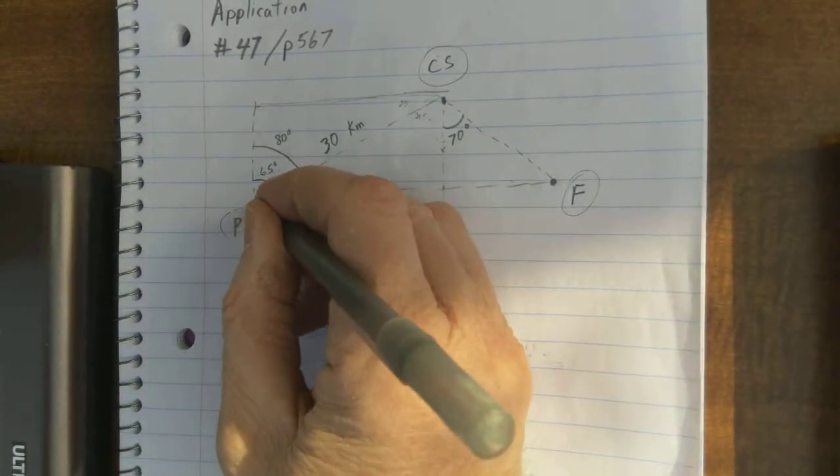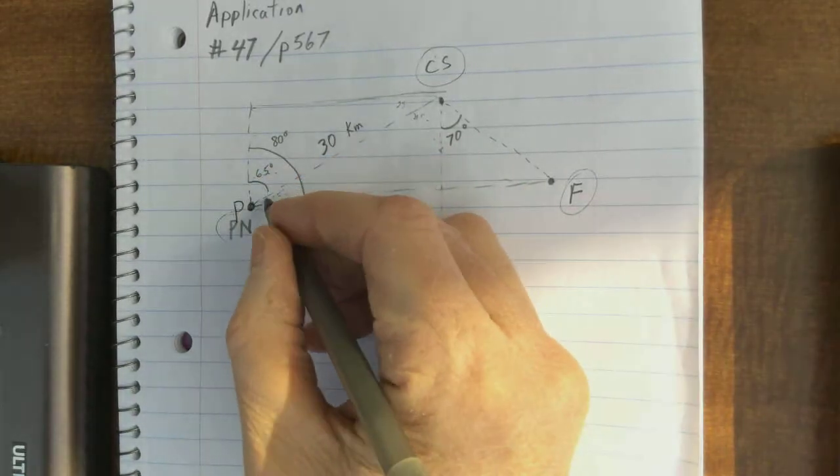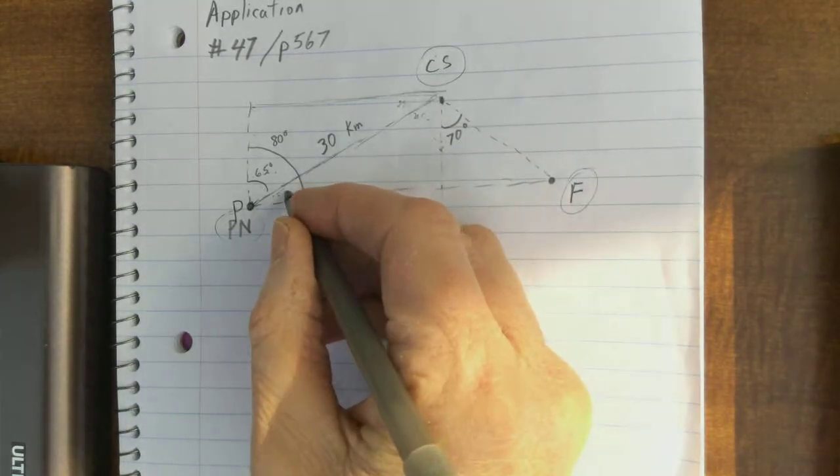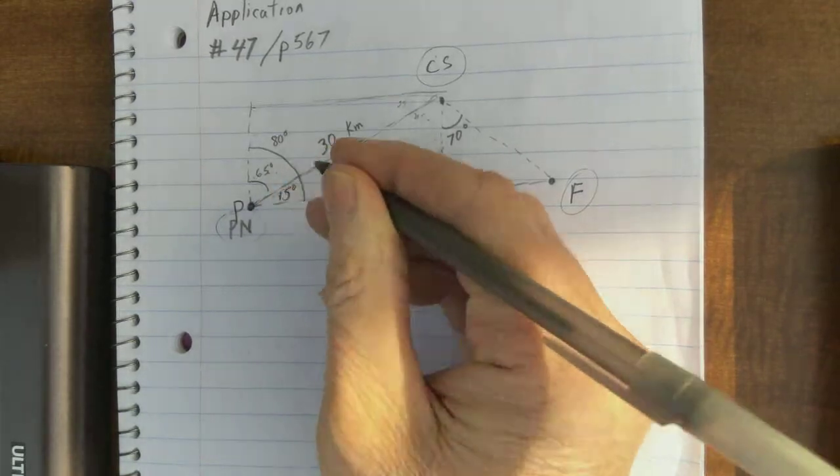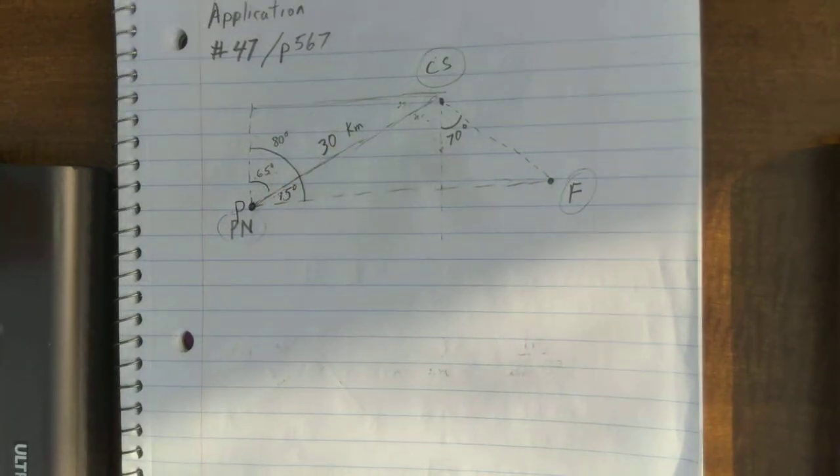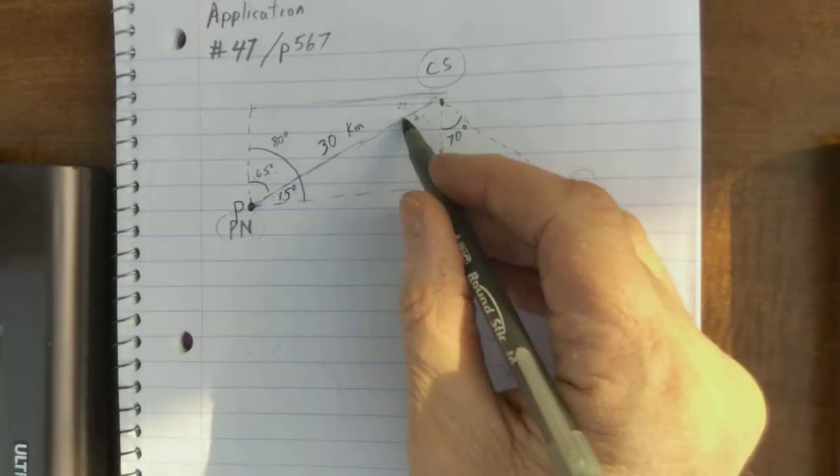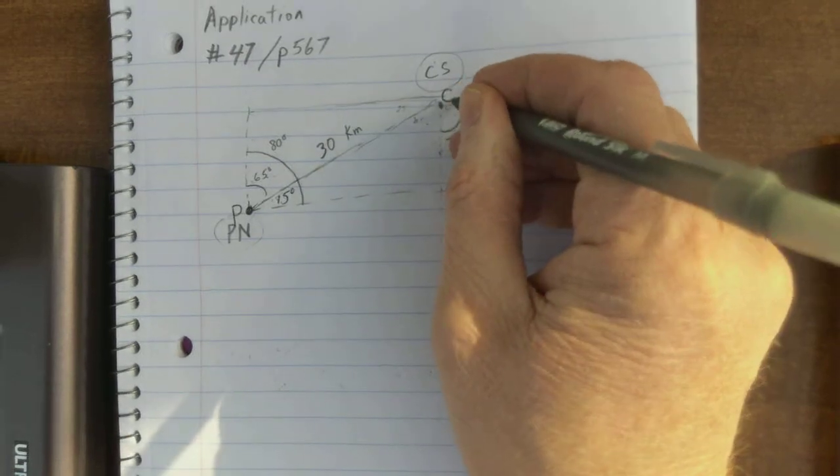And, if I were to just label this angle P. Now, when you look at this, you've got 80 degrees here and 65 degrees here. I think we're talking about a 15 degree angle there, inside there. And then, we kind of need this whole angle here. And, we can call this point C.